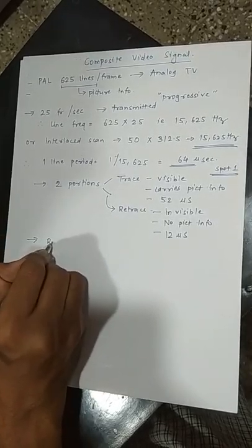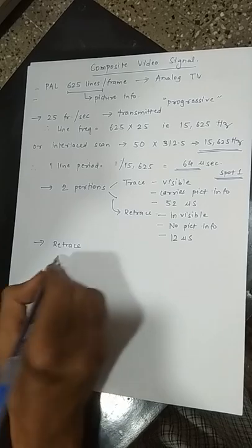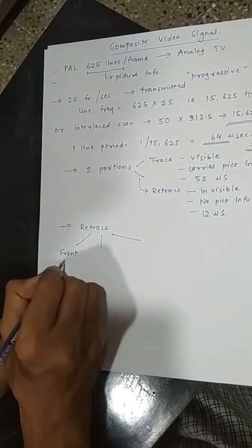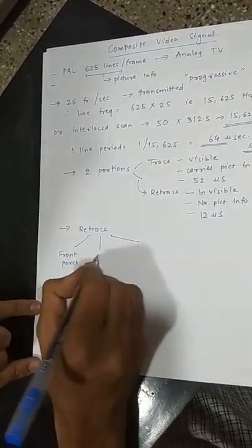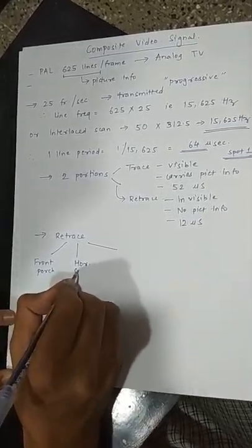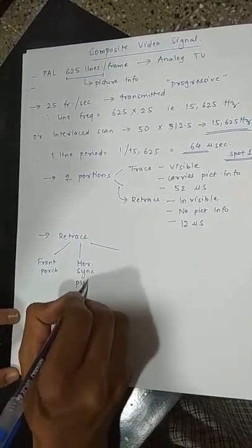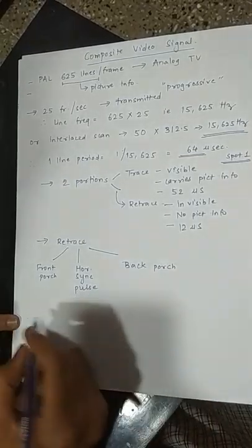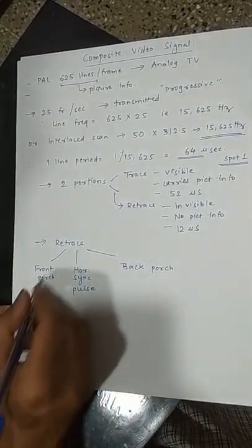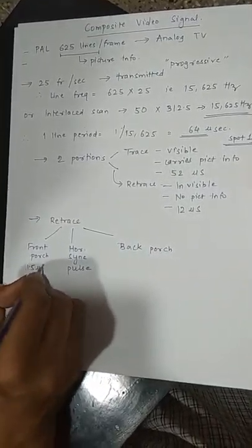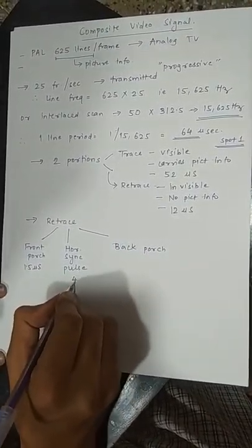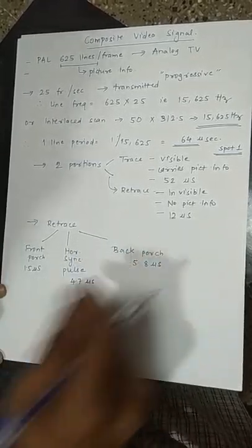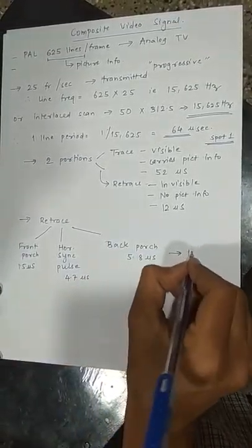The retrace portion is again divided into three parts: one is front porch, second part is horizontal sync pulse and third one is back porch. The time division of these three is front porch consists of 1.5 microseconds, horizontal pulses are of 4.7 microseconds and back porch is of 5.8 microseconds. If you add these three numbers, it comes out to be 12 microseconds.